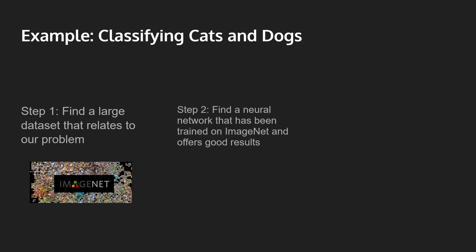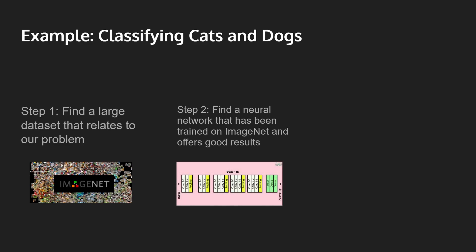The second step is to find a neural network that has been trained on ImageNet and offers good results. You can look at popular deep learning architectures, for example VGG, ResNet, InceptionNet, and others. In this case, we're going to look at VGG16 for our problem.